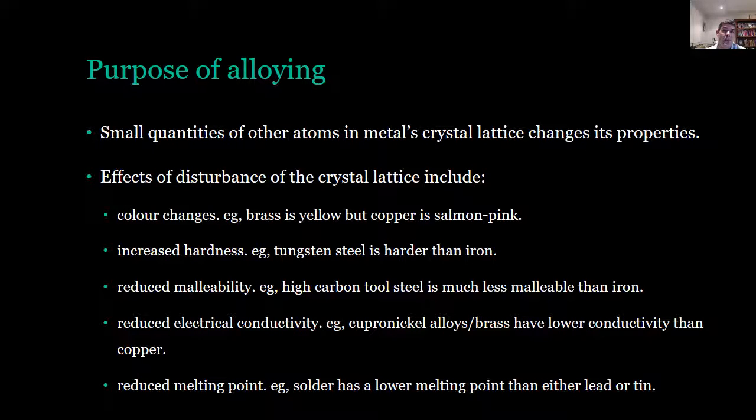Why would we alloy? Well, several reasons, mainly because when we start to add certain atoms into the metallic lattice structure we change the properties, and it's these changed properties that are most desired when we're creating alloys. Some of the changes include color, so brass for example is a different color to copper which is its primary metallic component. Hardness: steel is one of the most important alloys where hardness is a key factor. The addition of carbon increases the hardness of iron on its own.